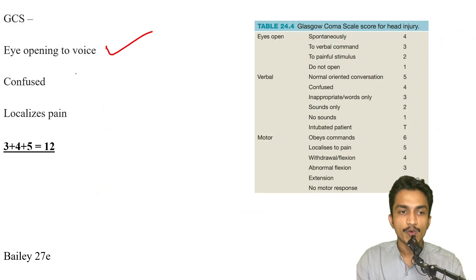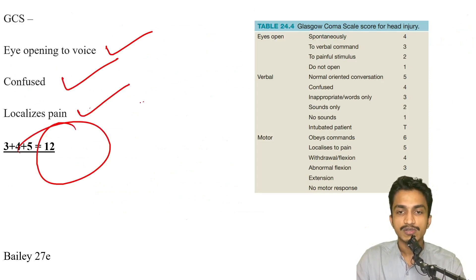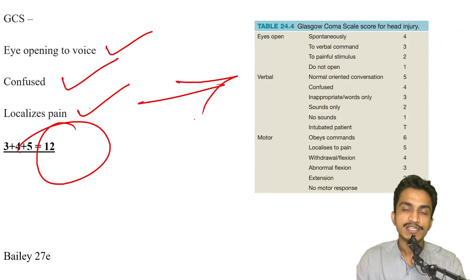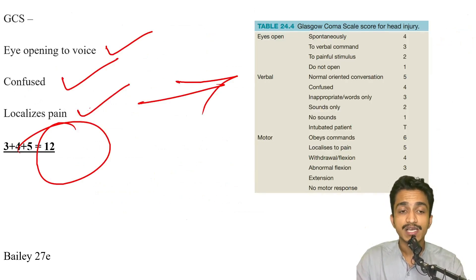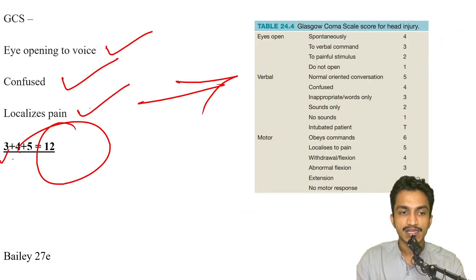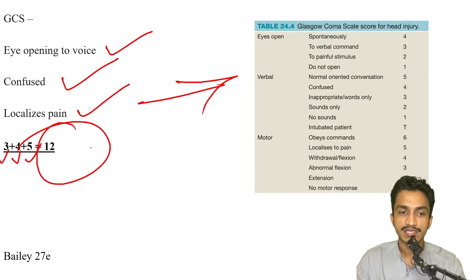GCS: if a patient has eye opening to voice, is confused, and localizes pain — GCS is very important and asked multiple times. Eye opening to voice is 3, confused verbal response is 4, and localizes pain is 5. Answer: 3 + 4 + 5 = 12.